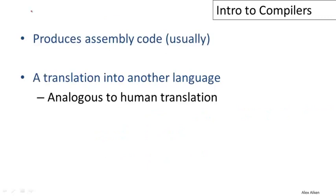Finally, the last compiler phase is code generation, often referred to as code gen. Code gen can produce assembly code. That's the most common thing that a compiler would produce. But in general, it's a translation into some other language, and this is entirely analogous to human translation. Just as a human translator might translate English into French, a compiler will translate a high level program into assembly code.